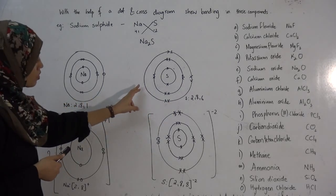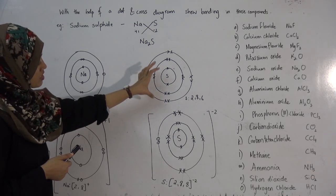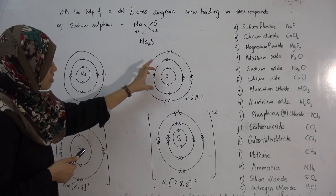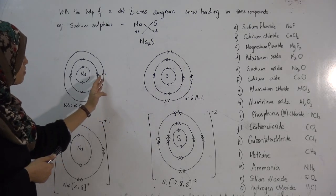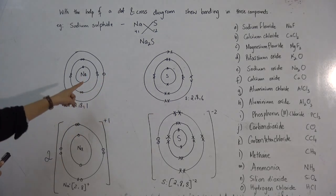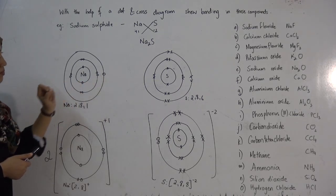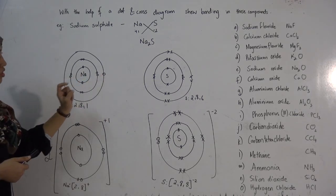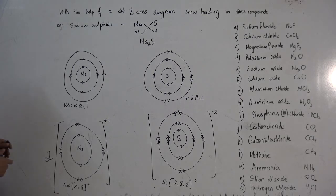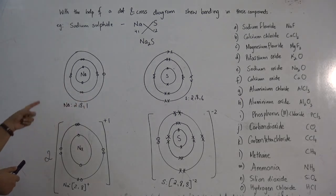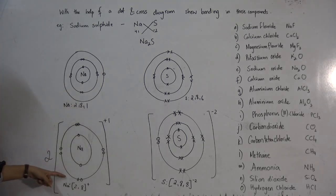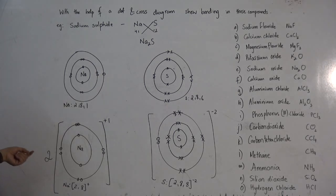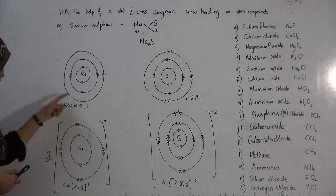All atoms want to achieve eight electrons in the last shell, and here sulfur has only six. A way to achieve eight electrons would be to gain electrons from sodium. Since sodium has only one electron to give, sulfur will take two electrons from two sodium atoms.